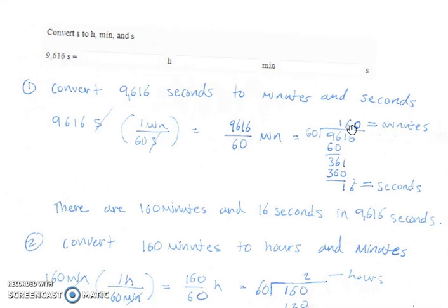When we do the division by hand, the quotient is the number of minutes and the remainder is how many seconds are left. Doing that division by hand we get 160 minutes and 16 seconds in 9,616 seconds.